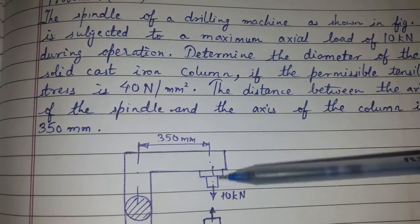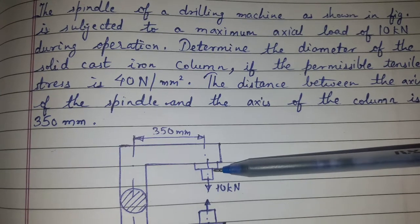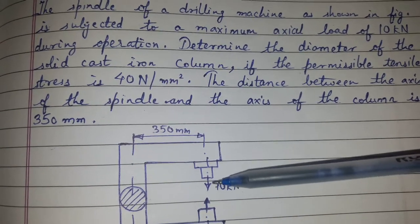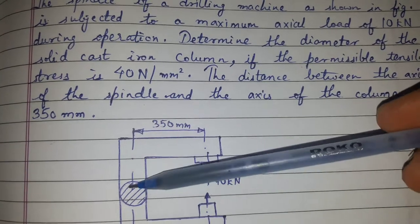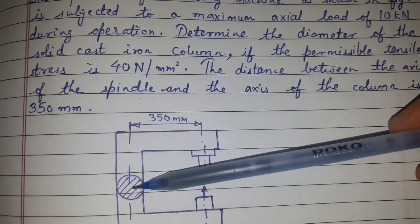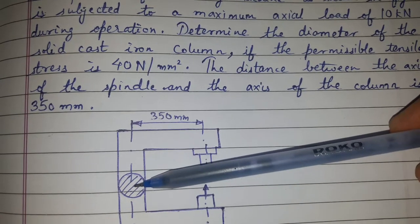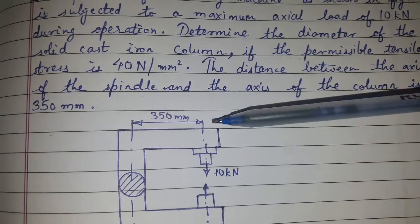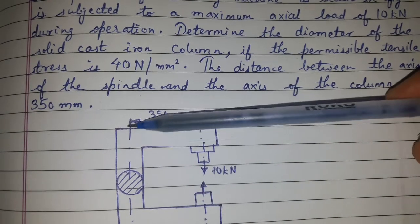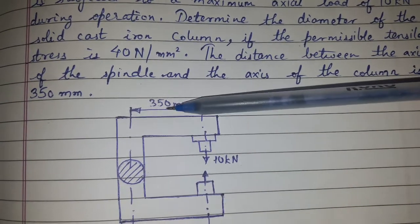The spindle of a drilling machine as shown in the figure is subjected to a maximum axial load of 10 kN during operation. Determine the diameter of the solid cast iron column if the permissible tensile stress is 40 N/mm². The distance between the axis of the spindle and axis of the column is 350 mm.